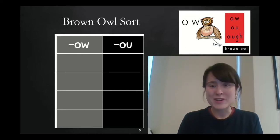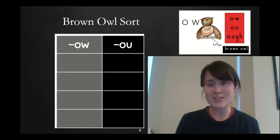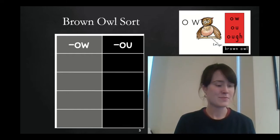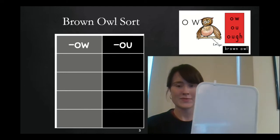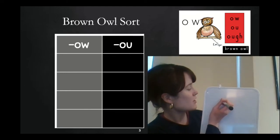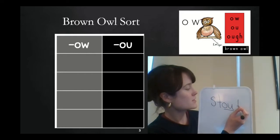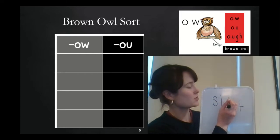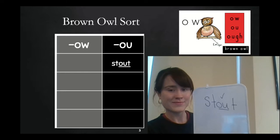The first word I want you to build is stout. Stout. Make sure you underline the spelling pattern that you chose. All right, friends. I would build stout like this. O-U says ow. Stout. Nice job. Check mark if you rocked it. And I'm going to add it to my O-U column.